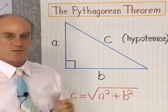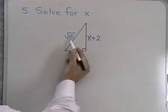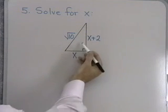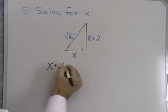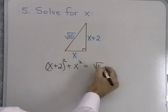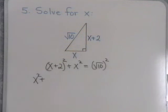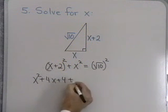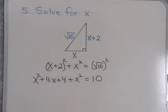Let's work a problem using the Pythagorean theorem. We want to solve for x in a right triangle where the hypotenuse is square root of 10, one leg is x plus 2, and the other is x. By the Pythagorean theorem, (x+2)² plus x² equals (√10)². Squaring gives x² + 4x + 4 + x² = 10. Collecting like terms: 2x² + 4x + 4 = 10. Subtracting 10 from both sides gives 2x² + 4x − 6 = 0.